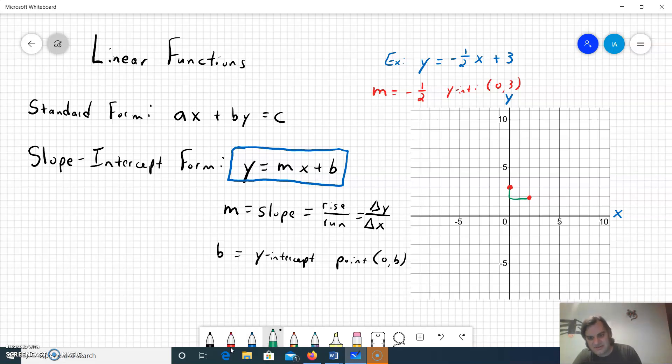We could repeat that process because this is a straight line. Down one over two again and we could do this as much as we like until we feel confident that we're going to draw a straight line. Once we have two points we can do that.